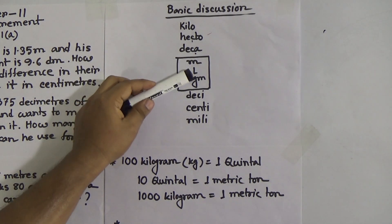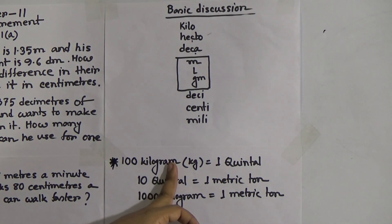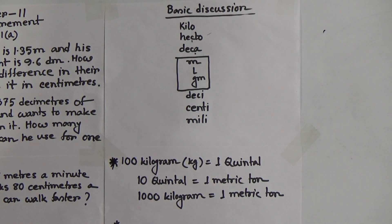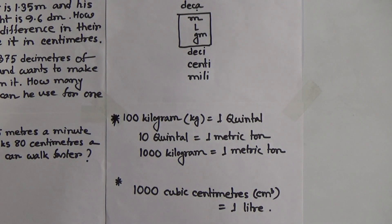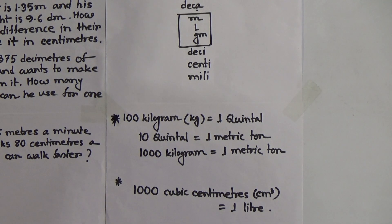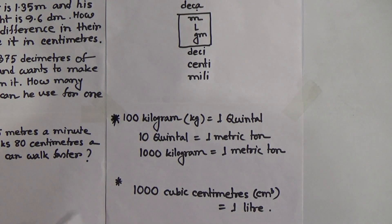Now there is another very important chart for short questions. One hundred kilograms equal to one quintal. So one quintal equal to 100 kilograms. One metric ton equal to 10 quintals. One metric ton equal to 1000 kilograms. Please memorize these: one metric ton equals 10 quintals, one metric ton equals 1000 kg, and one quintal equals 100 kg. This is very important.